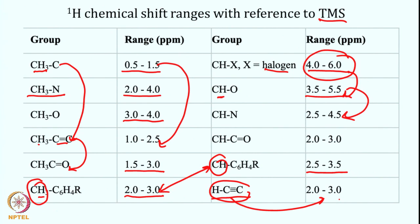These are the broad concepts: whether your proton of interest will be shielded or deshielded depends on what is attached to it — whether those groups are donating electrons or withdrawing electrons — and that dictates how the resultant chemical shift will change.